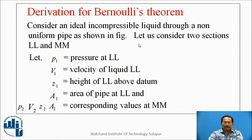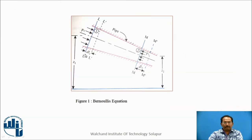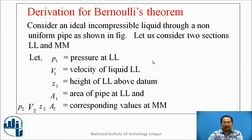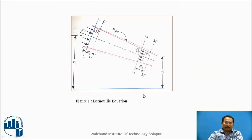This is the derivation for Bernoulli's theorem. Consider an ideal incompressible liquid flowing through a non-uniform pipe, as shown in the figure. Let us consider two sections, LL and MM. P1 and P2 are the pressures; V1 is the velocity of liquid at LL; Z1 is the height of LL above the datum; A1 is the area of the pipe at that upper section. Similarly, P2, V2, Z2, and A2 are the corresponding values at the lower section. By the continuity equation, Q equals A1·V1 equals A2·V2 — that is, discharge does not change.